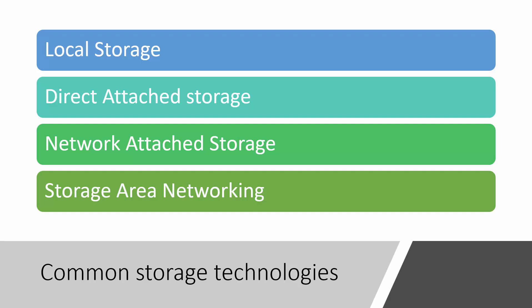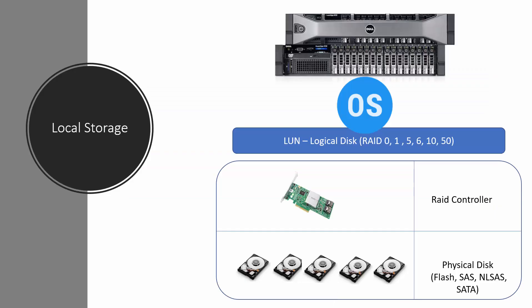The common storage technologies are local storage, direct attached storage, network attached storage, and storage area networking. Local storage is the storage available with the server or host. When you buy a server, you buy it with some hard disks. These hard disks are connected to a backplane, which is connected to a RAID controller. You then create a RAID 1, 5, or 6 as per your requirement, and when you install the operating system the disk will be available to it.